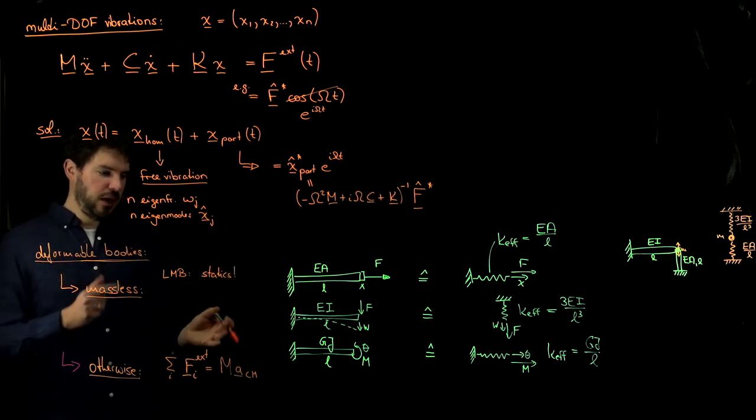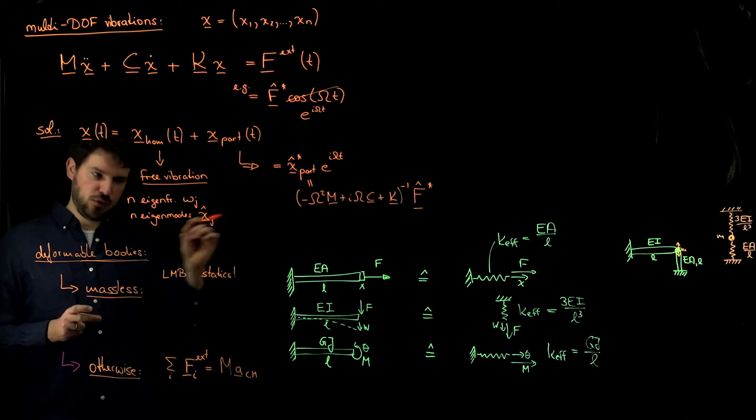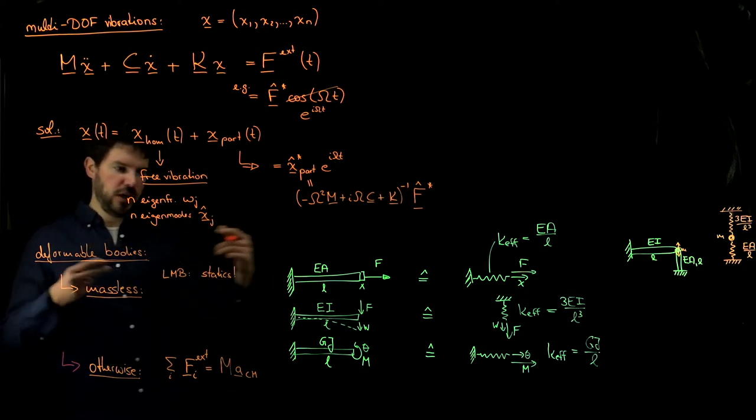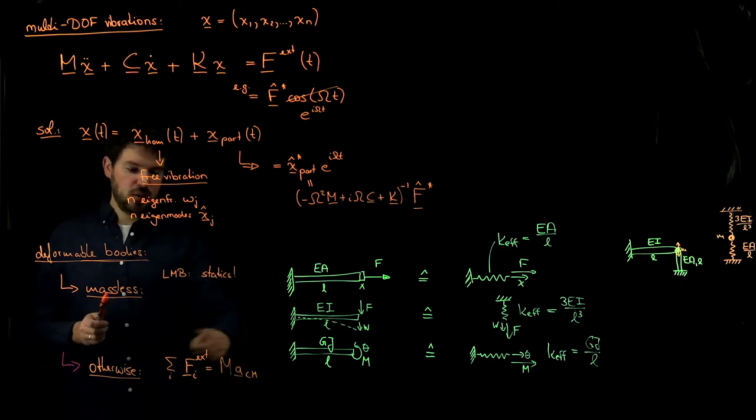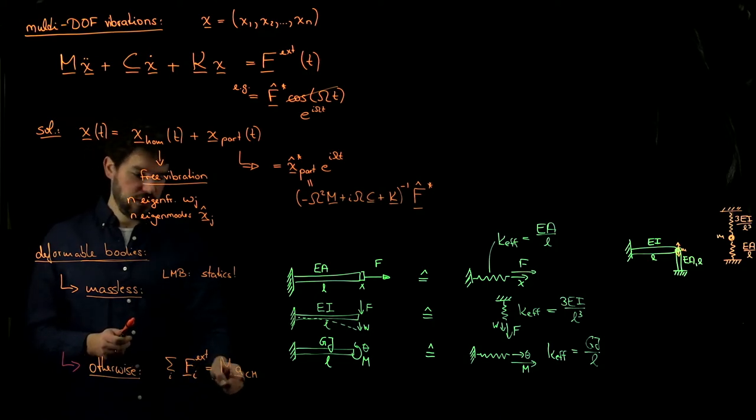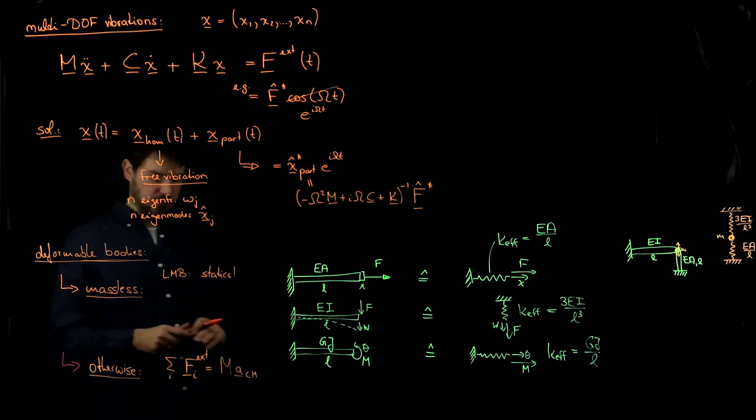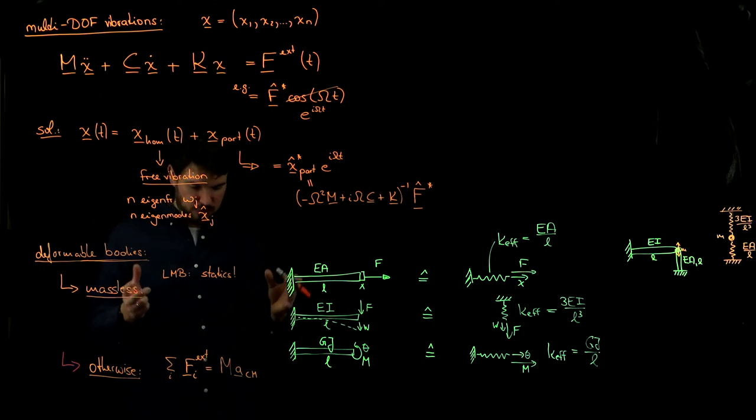The important point here is that this holds not only for an entire body, but also for sub-bodies. So if you take a large body and you cut it in half, you introduce some inner forces like you did in mechanics 2, inner torques and forces and so forth, then you can apply this equally to the sub-body. These are the external forces applied to the sub-body and this is the acceleration of the center of mass of the sub-body. So this works equally for sub-bodies.